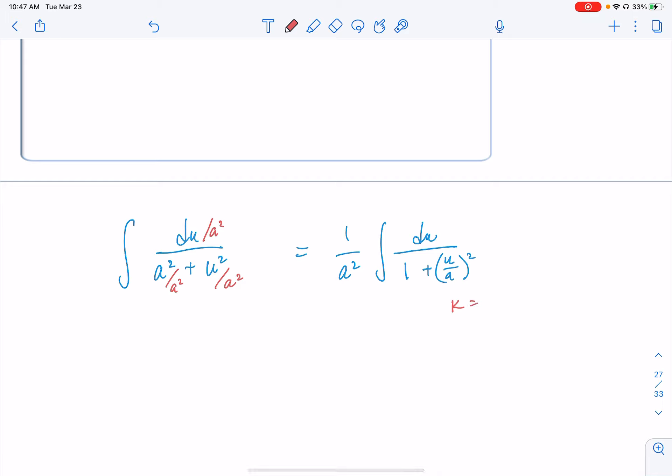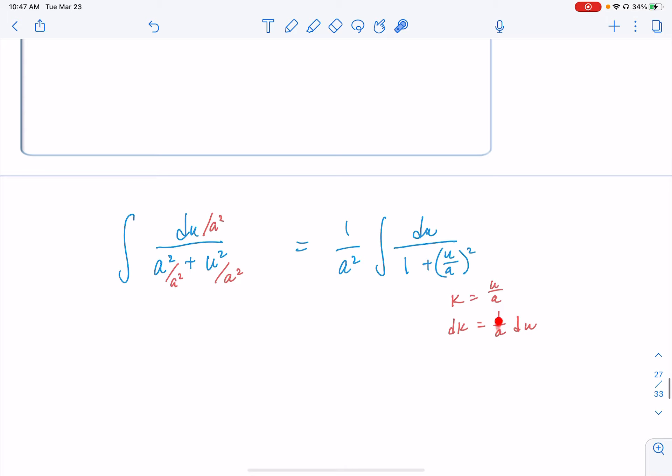So k = u/a. Then dk = (1/a)du, which we don't quite have—we pulled out 1/a². That's okay. We can fix this by putting in a 1/a and then compensating with times a out here.